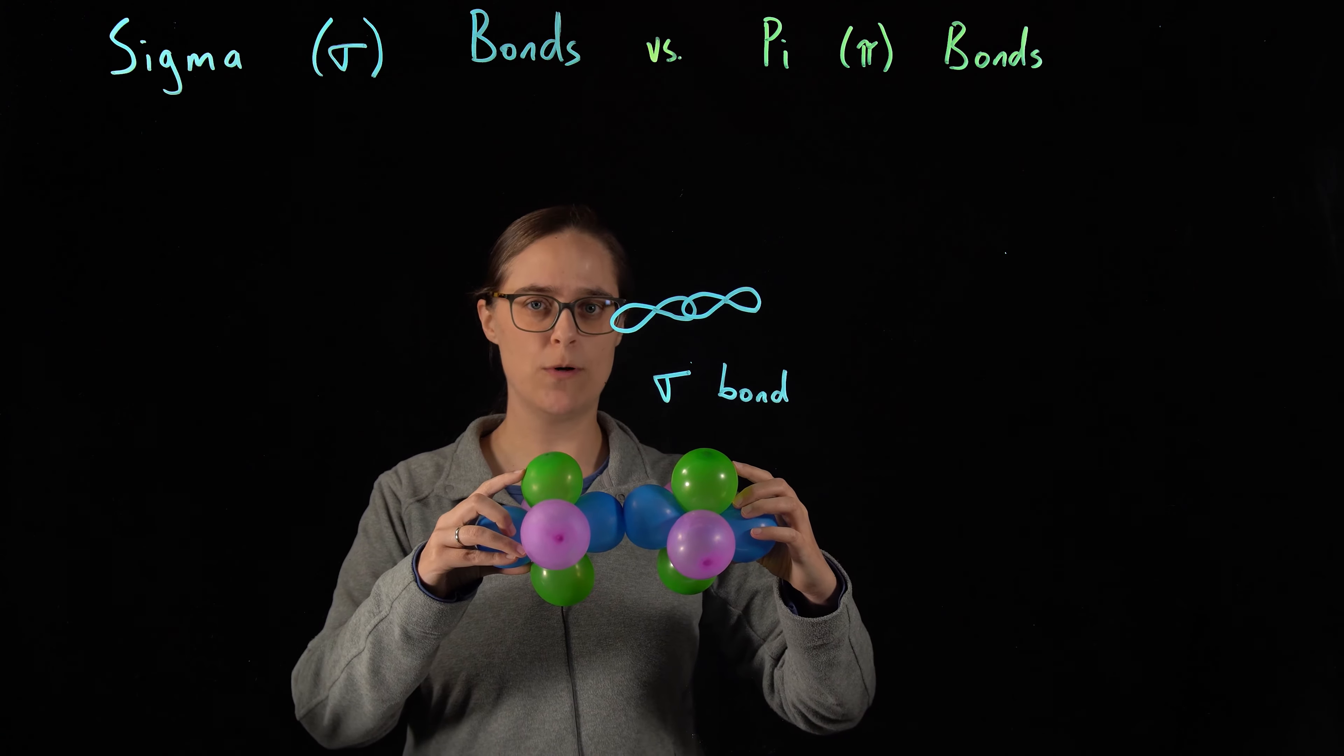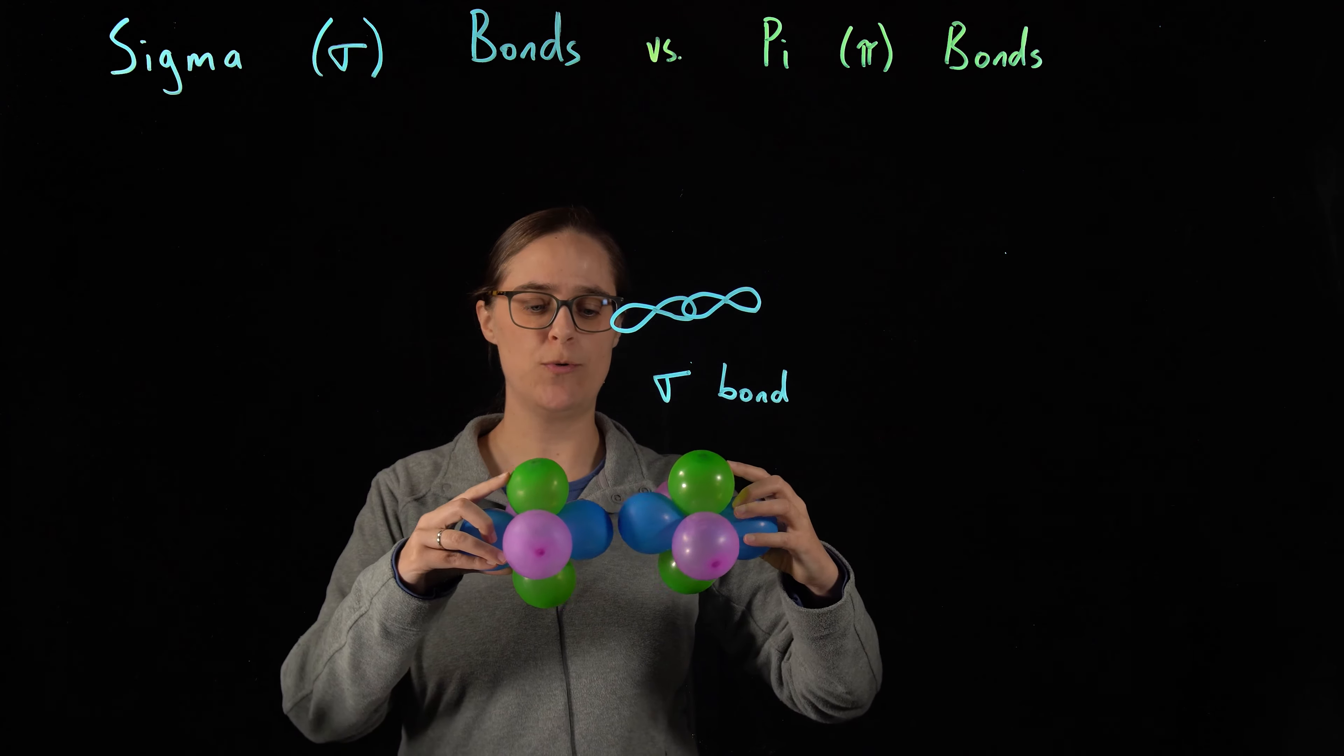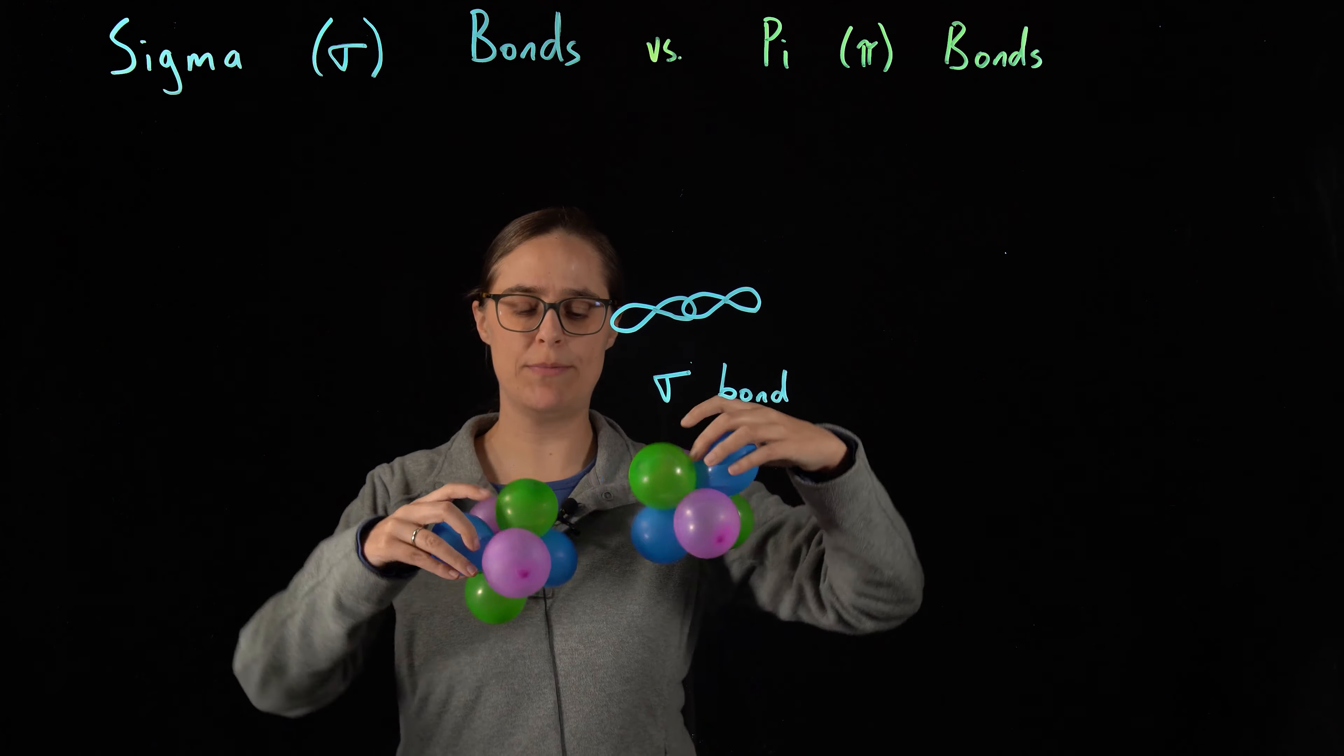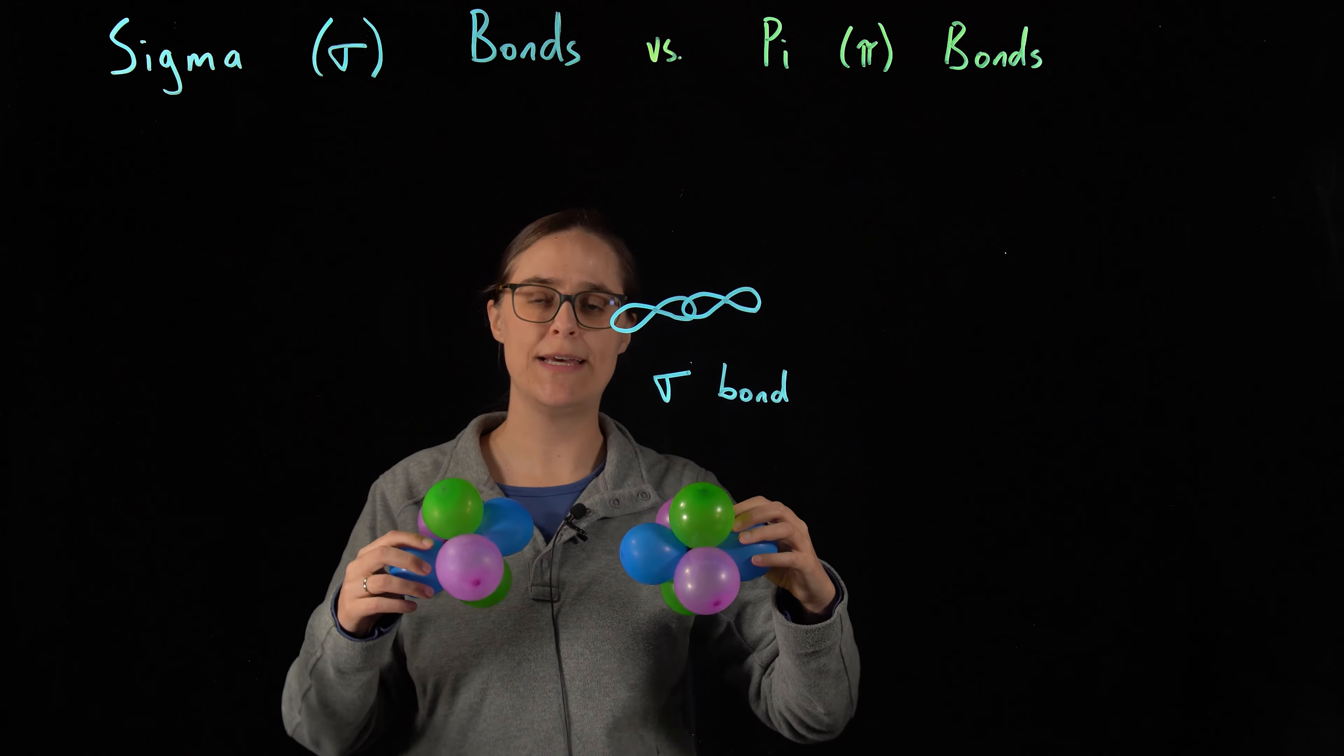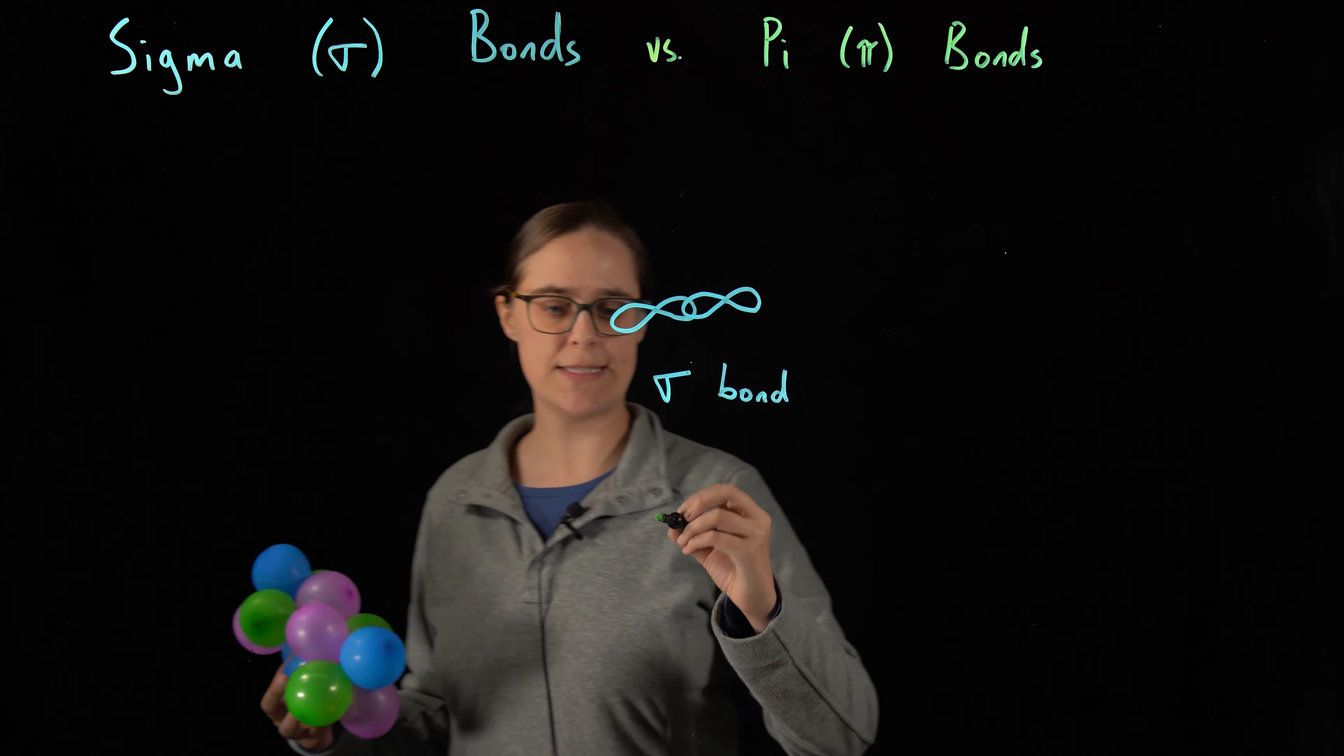Imagine getting these green orbitals to overlap. You are not going to be able to keep this sigma bond and still get green orbitals to overlap in this head-to-head configuration. An additional bond is going to have to be a lateral or side-to-side overlap.